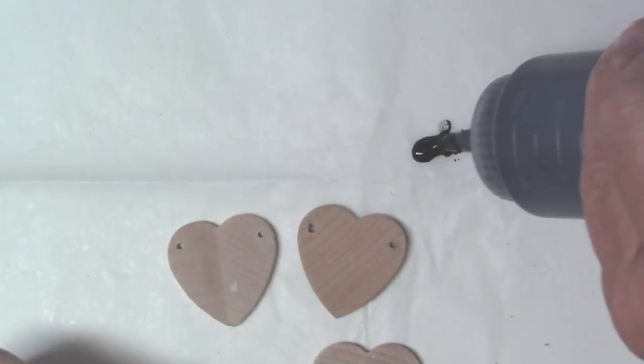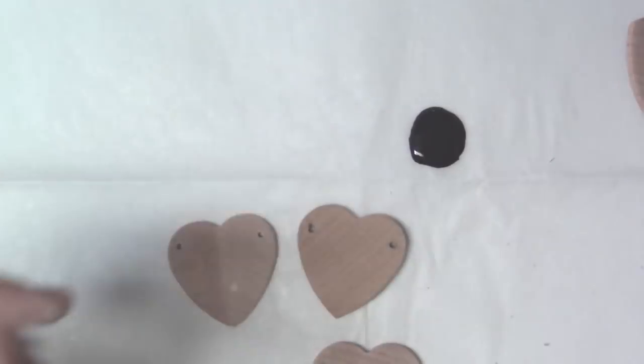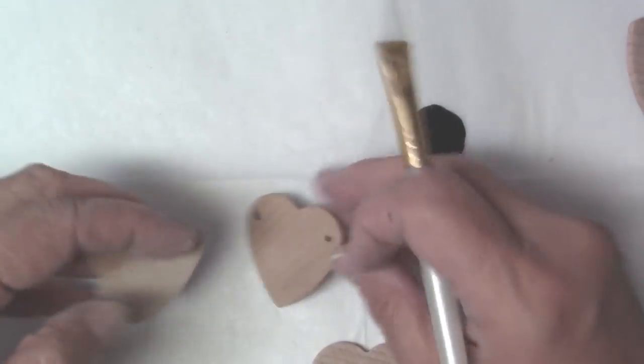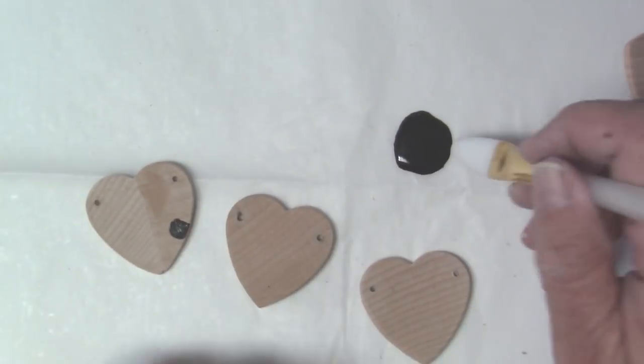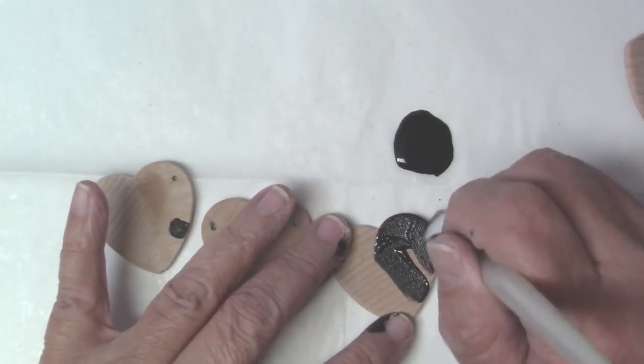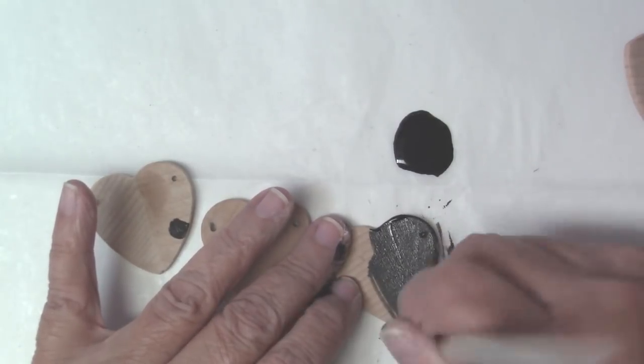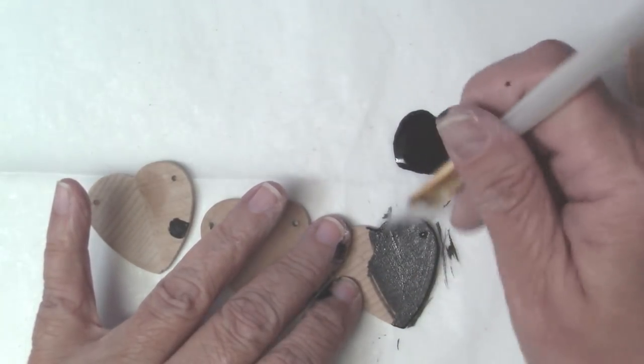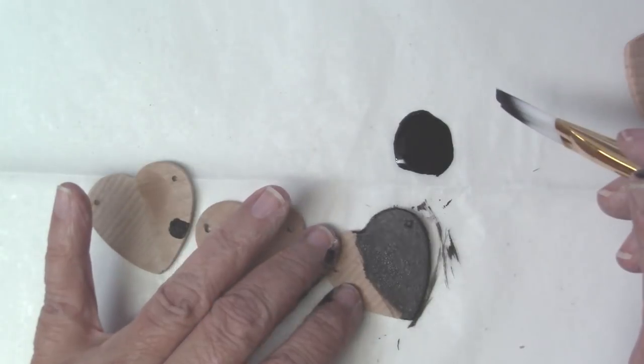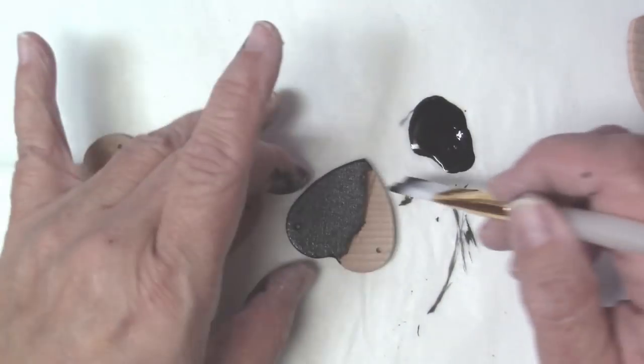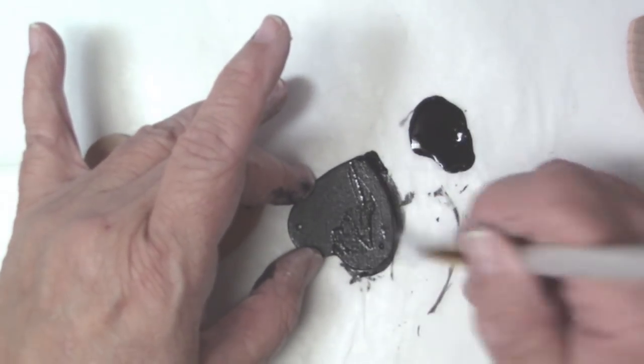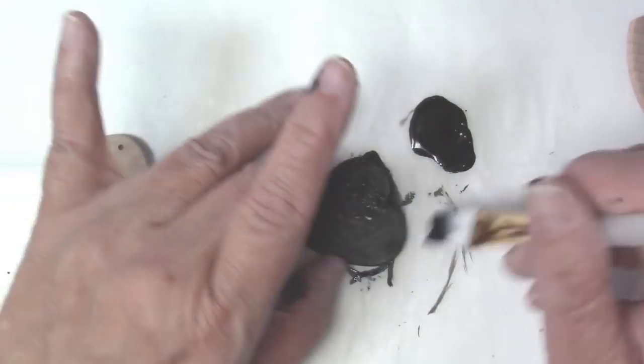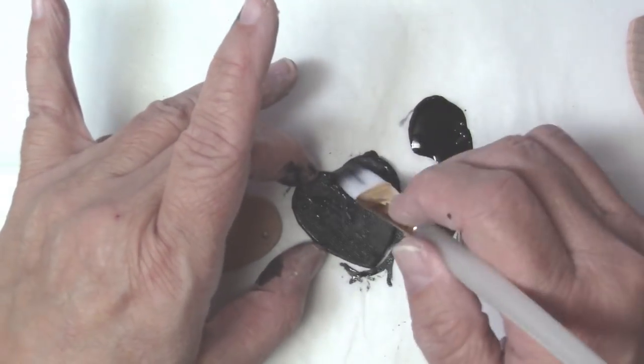This is the DecoArt Americana chalk paint that I like because it has a nice matte finish. One thing I want to say about these hearts is they're really soft wood, so they do warp. You can either gesso them or put several coats of the chalk paint on. I probably have about three coats of chalk paint and they warp slightly. So do one side, turn them over, do the other side, and it tends to straighten them out.